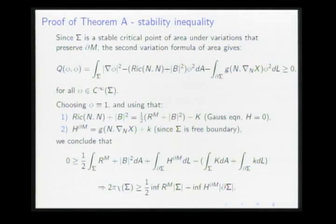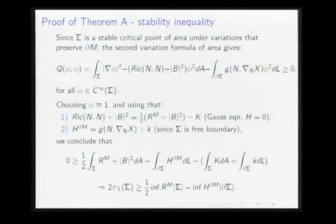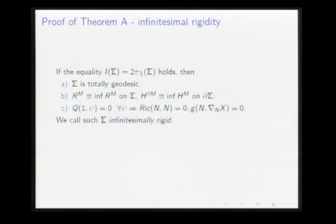The next step is to analyze what happens in the equality case. We dropped out the term involving the second fundamental form, so in the equality case sigma must be totally geodesic. Also, the scalar curvature of M must be constant along sigma, with a similar statement for H. Furthermore, Q of the constant function is zero, but Q is a non-negative quadratic form, so the constant function is in the kernel of Q. We conclude that the normal Ricci term must be zero. These three conditions together I call infinitesimal rigidity.